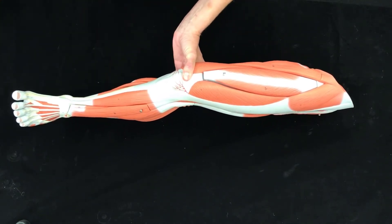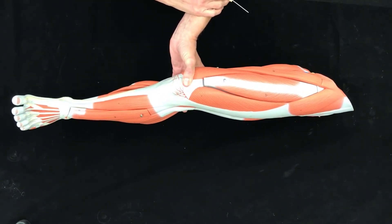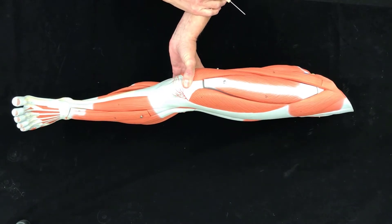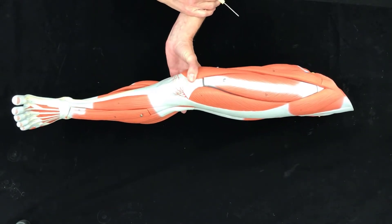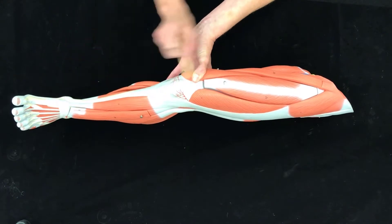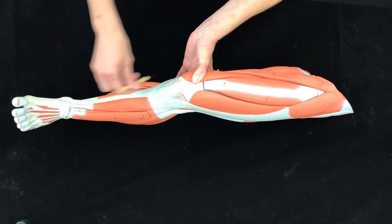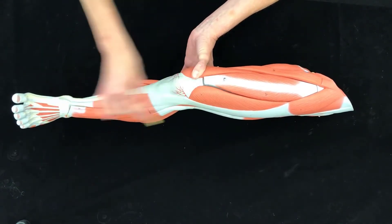Now we're going to be going over the surface anatomy for the leg. So this is a left leg. This would be the anterior surface, this would be medial, this would be lateral.